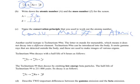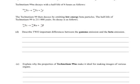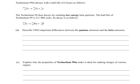The technetium-99M then decays by emitting low-energy beta particles. The half-life of technetium-99 is 211,000 years. Describe two important differences between gamma emission and beta emission. I'll give you probably two of the major ones and then maybe a couple of others.